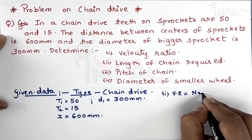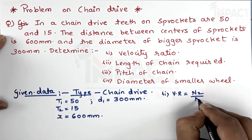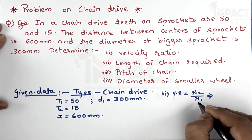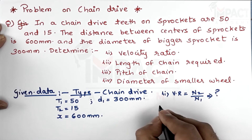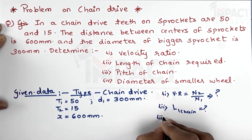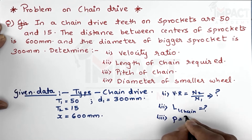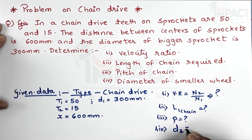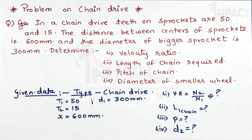The questions to determine are: first, velocity ratio (n2/n1); second, length of chain; third, pitch of chain; and fourth, the diameter of the smaller wheel, d2. Now let's start with the solution, beginning with the velocity ratio formula.